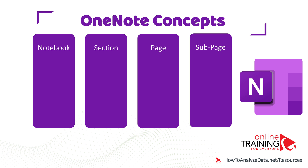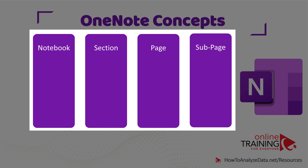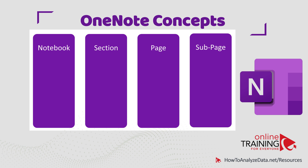To be effective with OneNote, you need to understand OneNote's structure. OneNote consists of four main objects: notebook, section, page, and subpage.